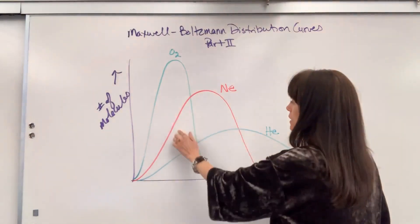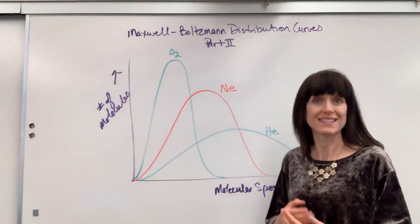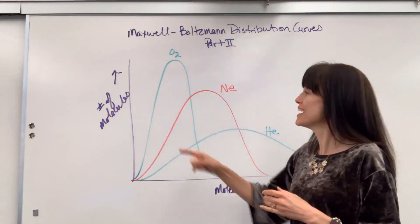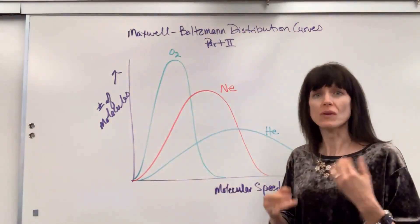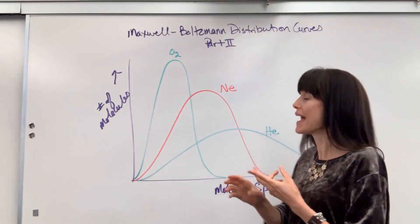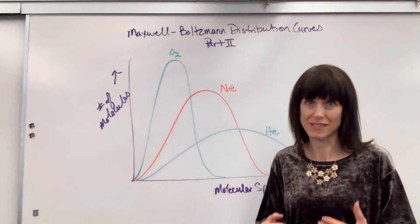You already know area under the three curves, that's the same. We're going to have the same number of molecules total underneath each curve. What's different? Two things: the average speed and the distribution of speeds.